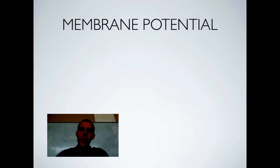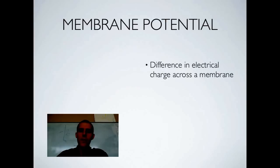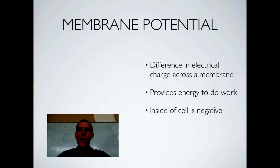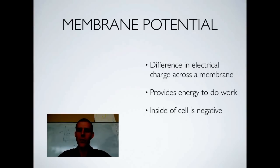Active transport is used for many things, one of which is to maintain membrane potential. Membrane potential is a difference in electrical charge across a membrane. On our membranes, you can have a situation where the outside of the membrane is positive and the inside is negative, and that is set up through one of these pumps.